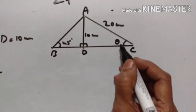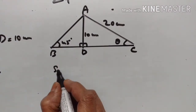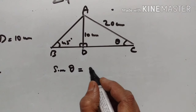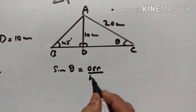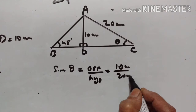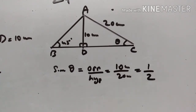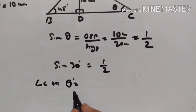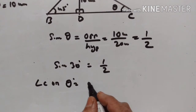Now, sin C equals opposite upon hypotenuse. So sin C equals 10 cm upon 20 cm, which is equal to half. Sin of what is equal to half? Sin of 30° is equal to half. Therefore angle C is equal to 30°.